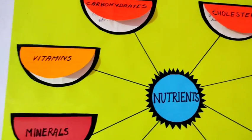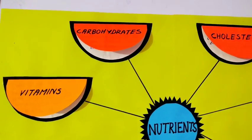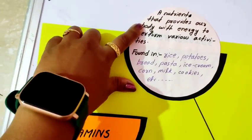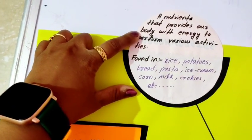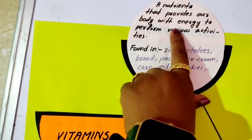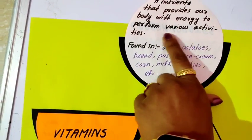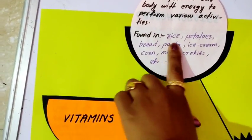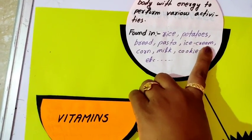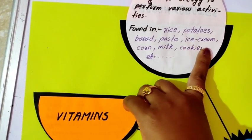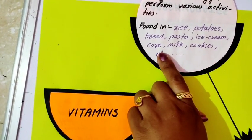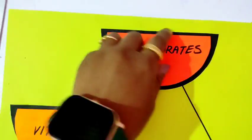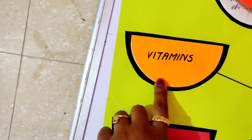Now let us discuss types of nutrients. This is a nutrient that provides our body with energy to perform various activities. Found in vitamins.